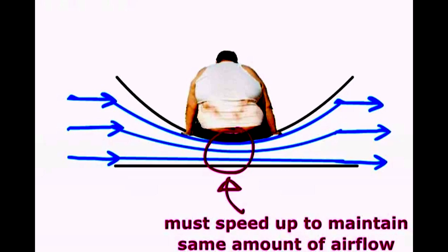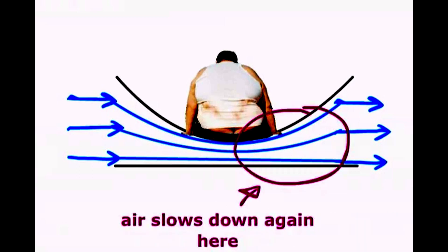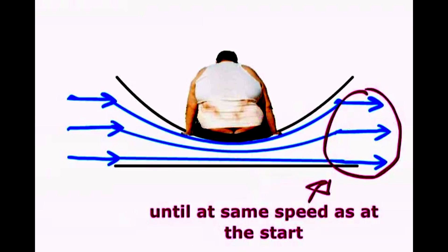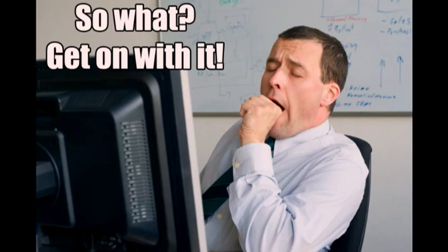That's all well and good, but what has all that got to do with a wing? Well, here is a wing, and here are the streamlines around the wing. Within these streamlines are stream tubes. You can think of these streamlines and stream tubes as being little wind tunnels like before, as air cannot move from one stream tube into another.